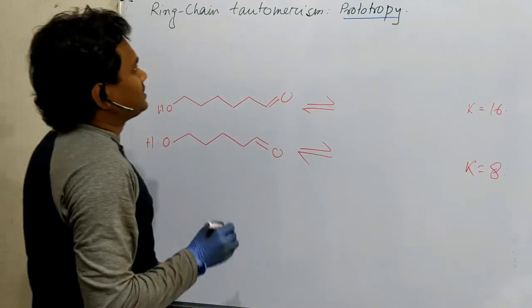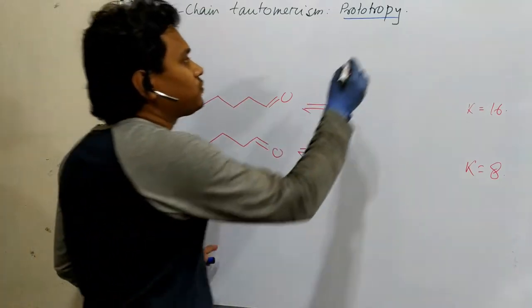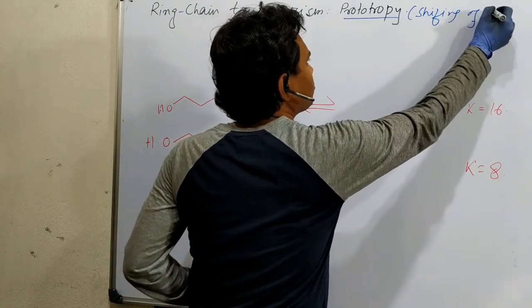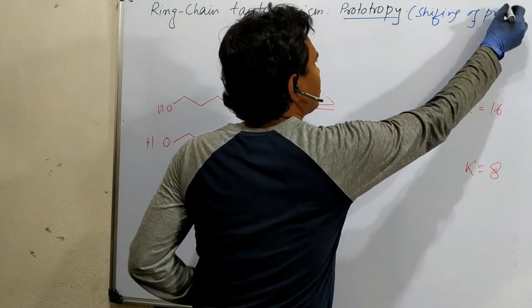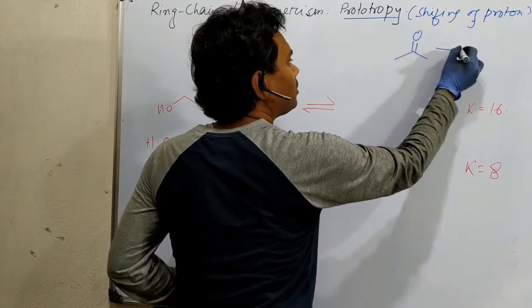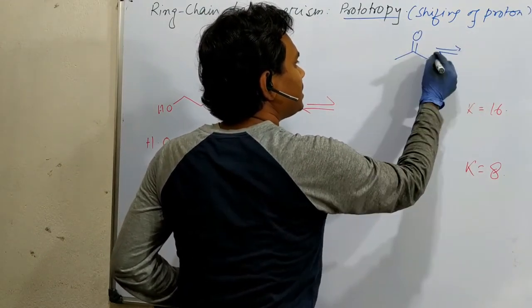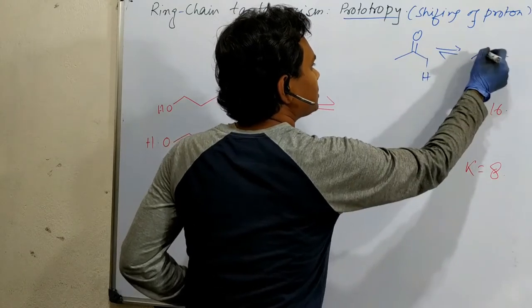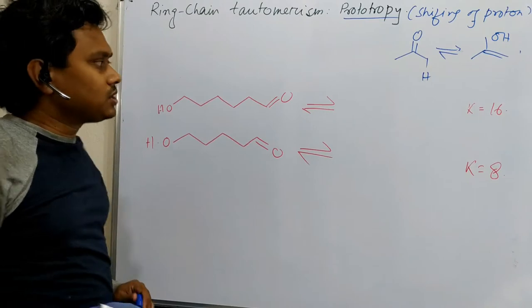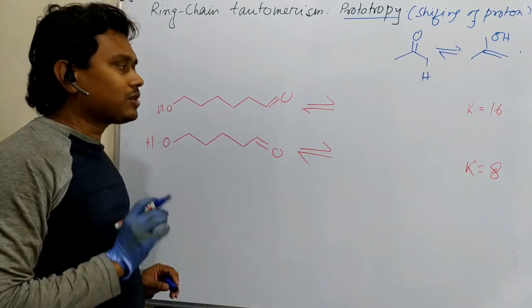Okay. For example, prototropy means shifting of proton. Shifting of proton. For example, if you think keto-enol, what is happening here? This hydrogen is shifted. So this is also belongs to a prototropic. So similarly, this is a prototropic.